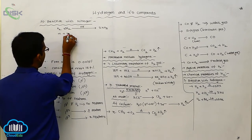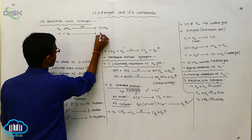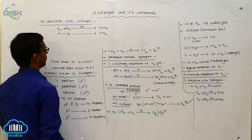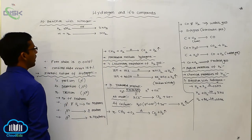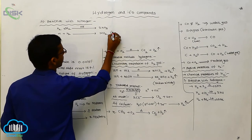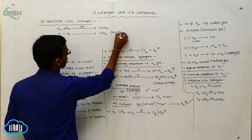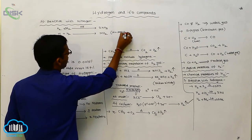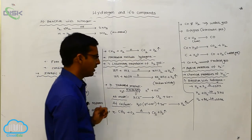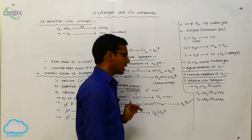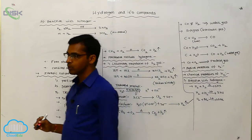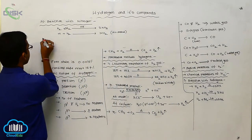Nitrogen reacts with hydrogen to form ammonia — metallic hydride. Metals react with hydrogen to produce MH₂, metallic hydride, where M indicates metal.